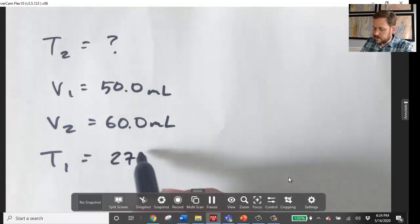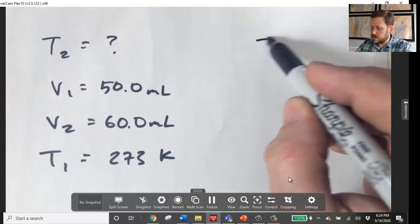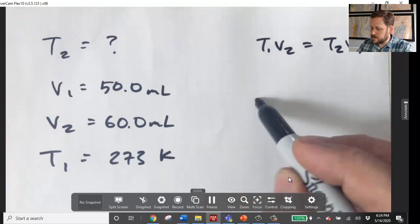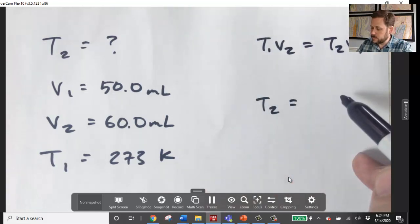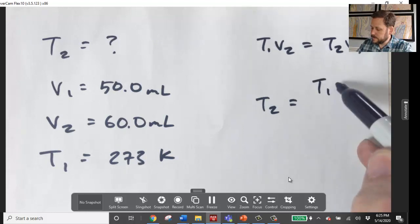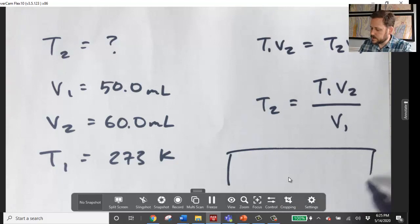So if we want to rearrange the equation T1V2 equals T2V1 and solve for T2, then we're going to use T1V2 divided by V1. Let's go ahead and plug those numbers in.